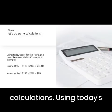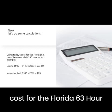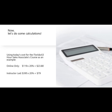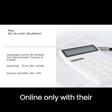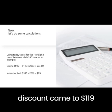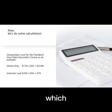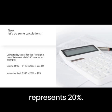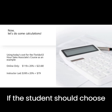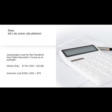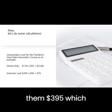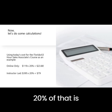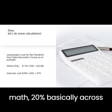Now, let's do some calculations. Using today's cost for the Florida 63-hour sales associate course as an example: the online-only price with discount came to $119, of which $23.80 represents 20%. If the student chooses an instructor-led course, today it would cost $395, and 20% of that is $79. Simple math — 20% basically across the board.